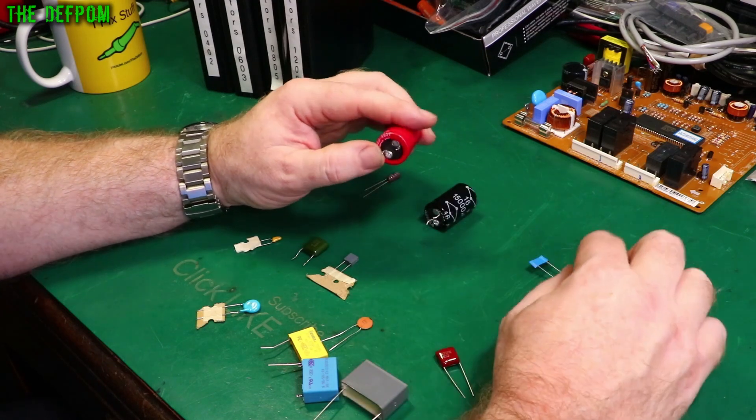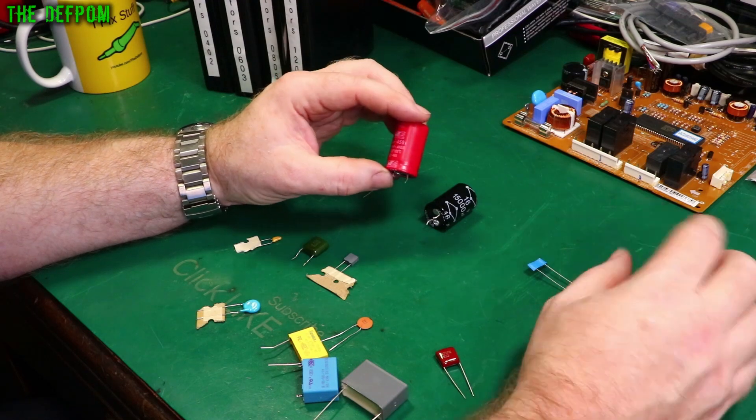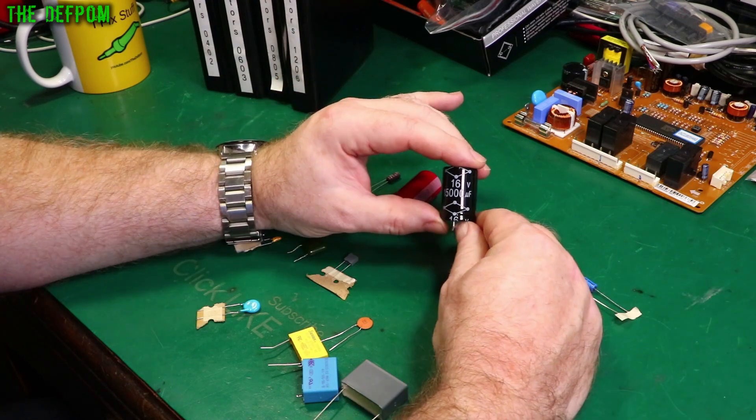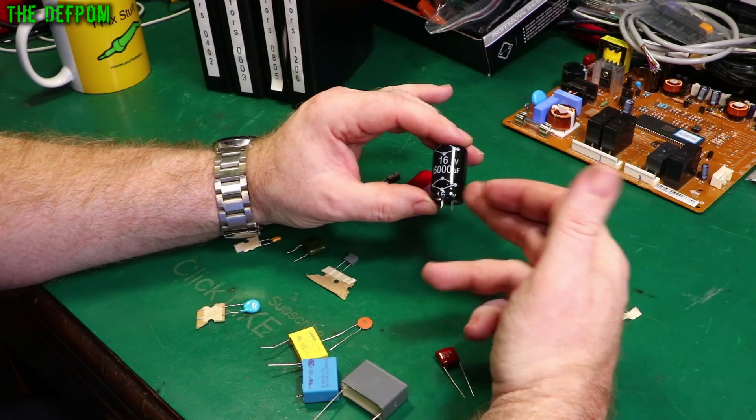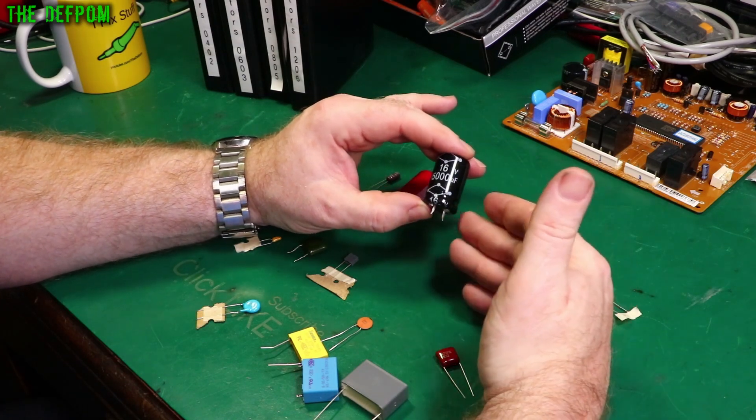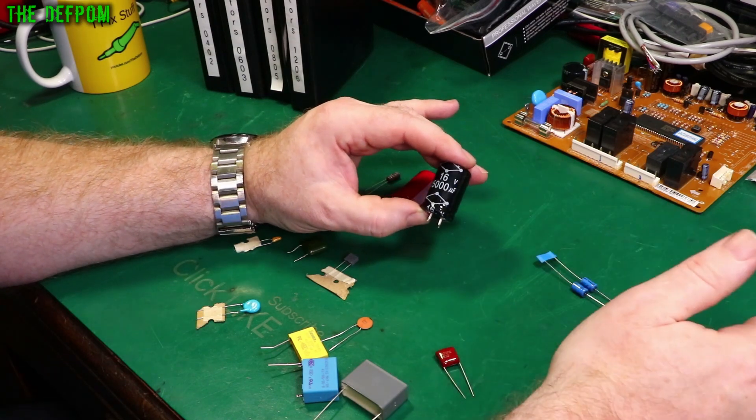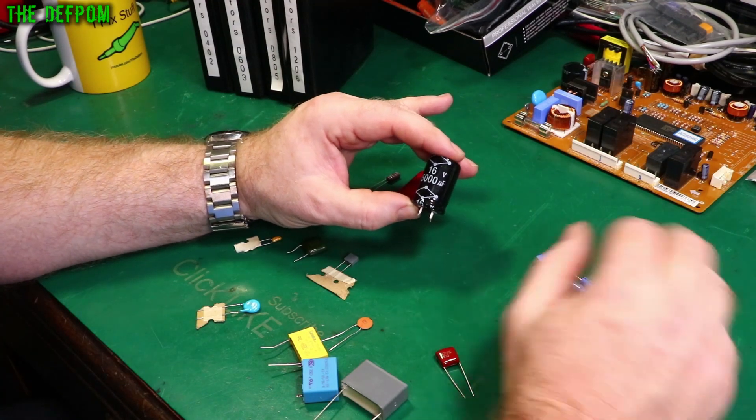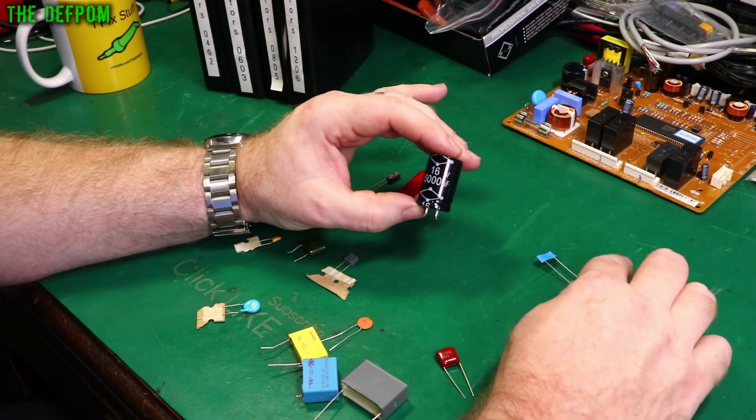So this is often used in mains power supplies, switch mode power supplies, that kind of thing. This one's 15,000 microfarad at 16 volts. Again this will be used in power supply systems. Once it's been converted to DC from AC, you need smoothing to get the noise out and get the ripple out. You'd have big capacitors like this on those sorts of lines.